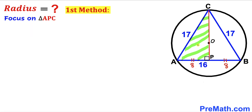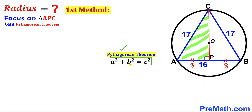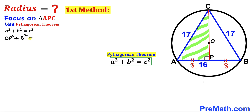Now let's focus on right triangle APC and apply the Pythagorean theorem to find side length CP. Our formula is a² + b² = c², where the hypotenuse is 17 and one leg is 8. So we get CP² + 8² = 17².